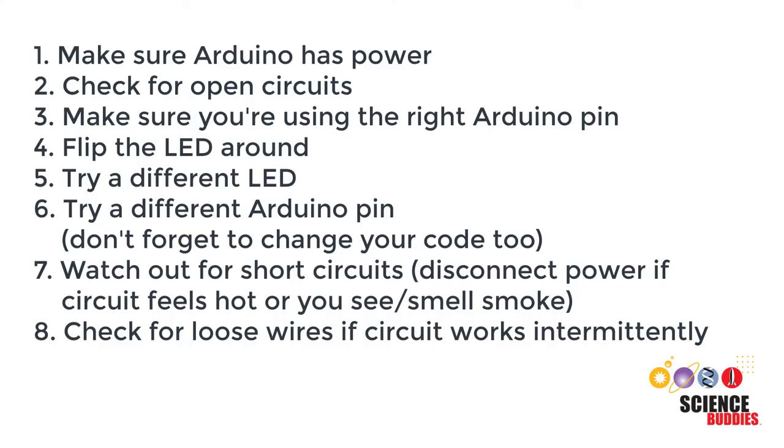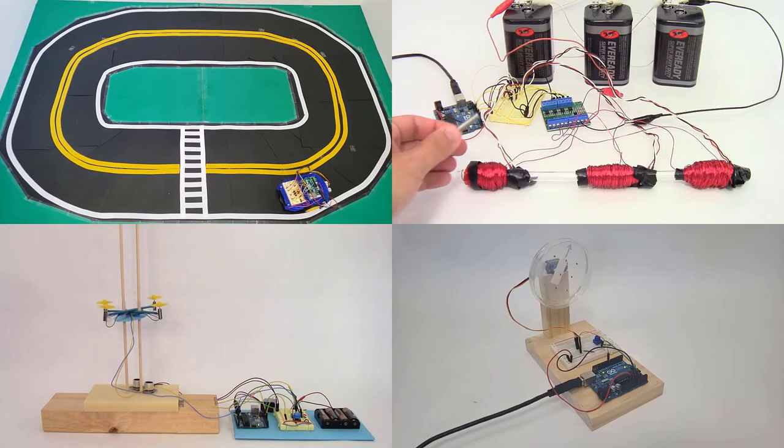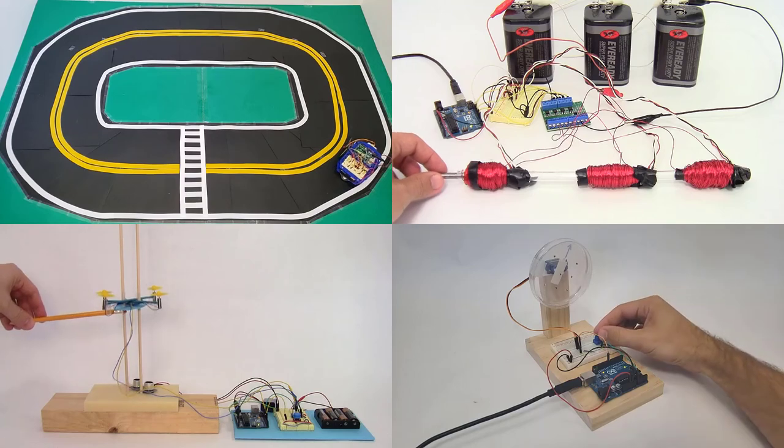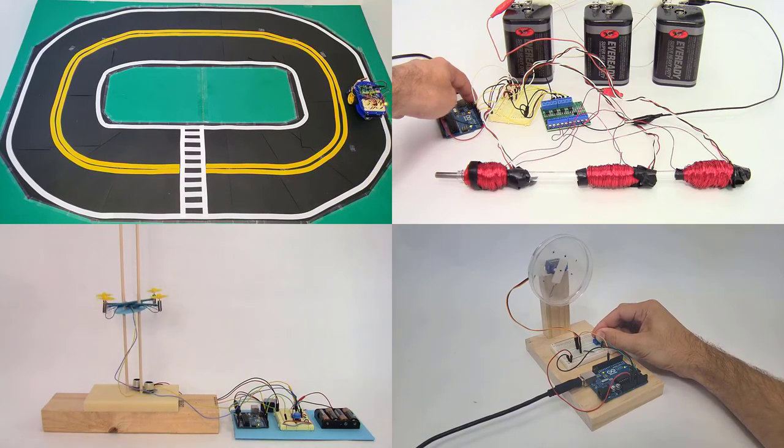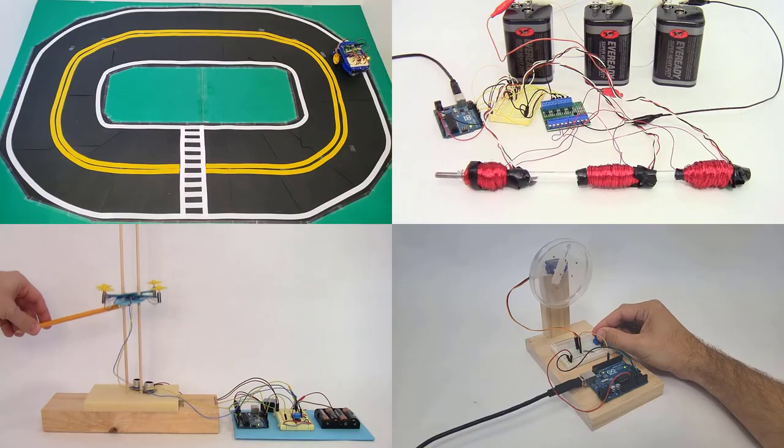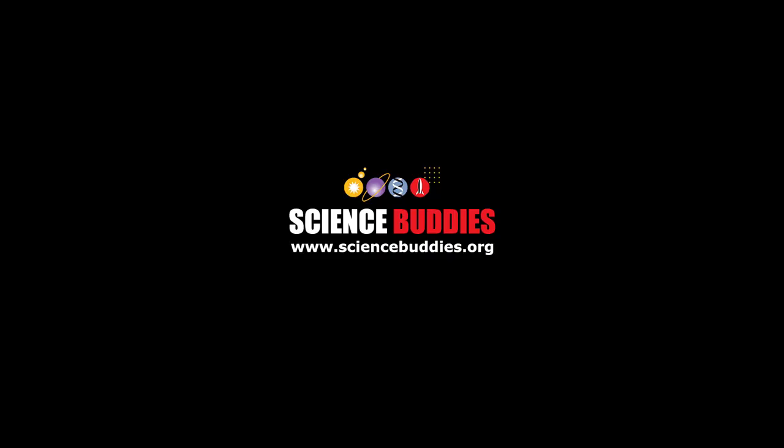Now while this is not an exhaustive list of things that could go wrong with a circuit, it should give you a good checklist to go through when you're getting started with an Arduino and simple circuits like LEDs. You can also have things wrong with your code, but debugging code is a topic for a different video. For more Arduino tutorials and lots of cool projects you can do with an Arduino, check out the links in the video description. For thousands of other fun, hands-on science and engineering projects, visit us online at www.sciencebuddies.org.